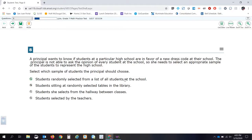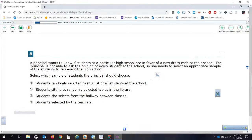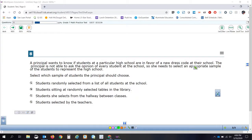Select which sample of students the principal should choose: students selected randomly from a list of all students at the school, students sitting at randomly selected tables in the library, students she selects from the hallway between classes, and students selected by the teachers. I've got to know a little bit about statistics to answer this one. The key thing we need to focus on here is she needs to select an appropriate sample of students to represent the entire high school. She doesn't want to sample a group that's going to only represent part of the high school.